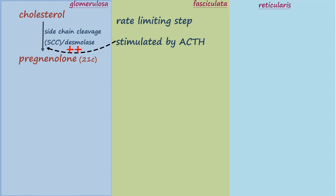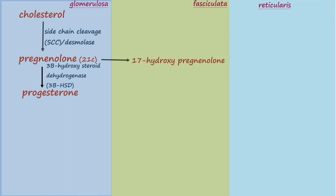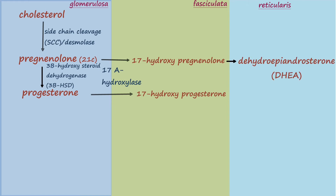ACTH is the major regulator of cortisol synthesis and androgen synthesis. Pregnenolone will be converted to progesterone, catalyzed by 3-beta-hydroxysteroid dehydrogenase. Moving horizontally, pregnenolone will be converted into 17-hydroxy-pregnenolone, and progesterone will be converted into 17-hydroxy-progesterone — both reactions catalyzed by 17-alpha-hydroxylase. Then 17-hydroxy-pregnenolone is converted into DHEA, and 17-hydroxy-progesterone is converted into androstenedione, both catalyzed by 17,20-lyase.